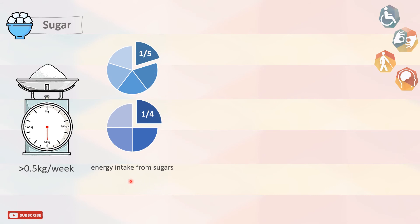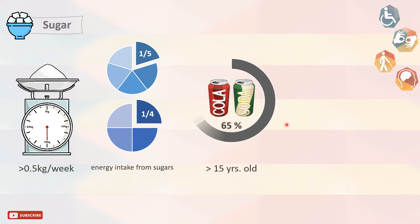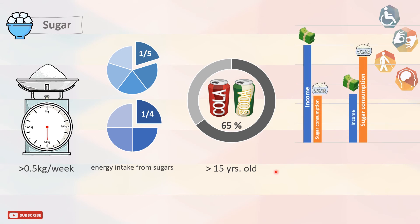Most of these are added sugars, more than two-thirds of which come from sweets, table sugar, and soft drinks. 65% of all soft drink sales are directed to children younger than 15 years old. Low-income families consume more sugar per person per day than higher-income families.